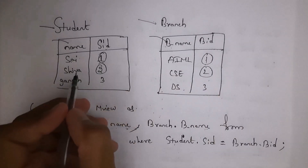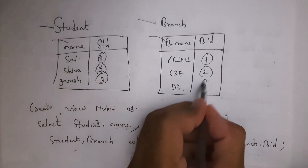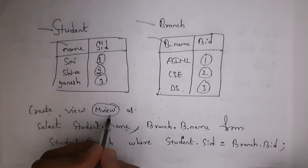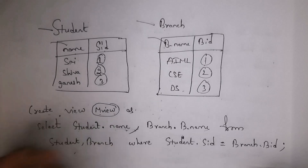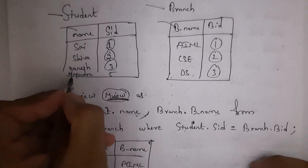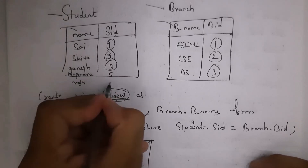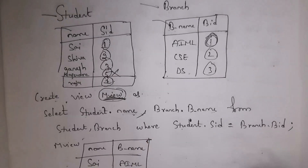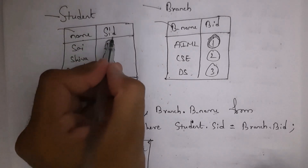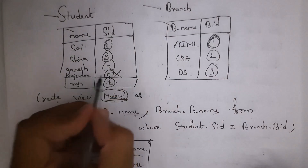I created the view named 'mview'. This is the mview data. In the student table there is Nagendra with SID 5 and Raju with SID 1. The condition is student.SID = branch.BID. For Nagendra the SID is 5, but 5 is not present in the BID column, so that record will not be selected.